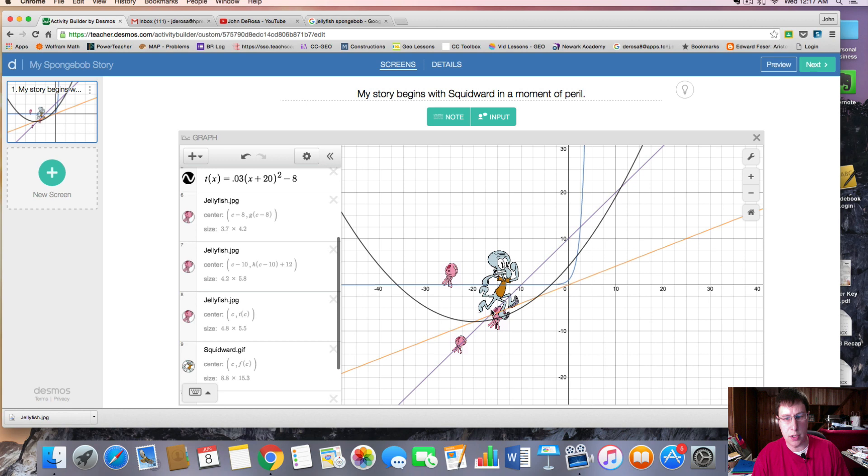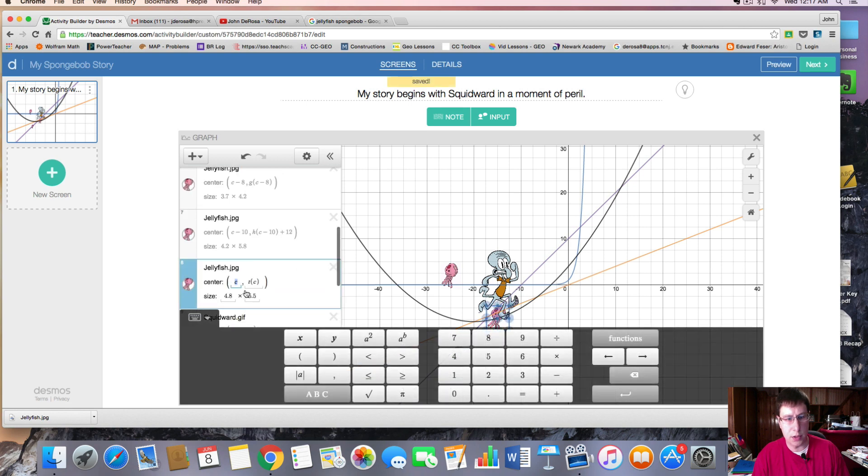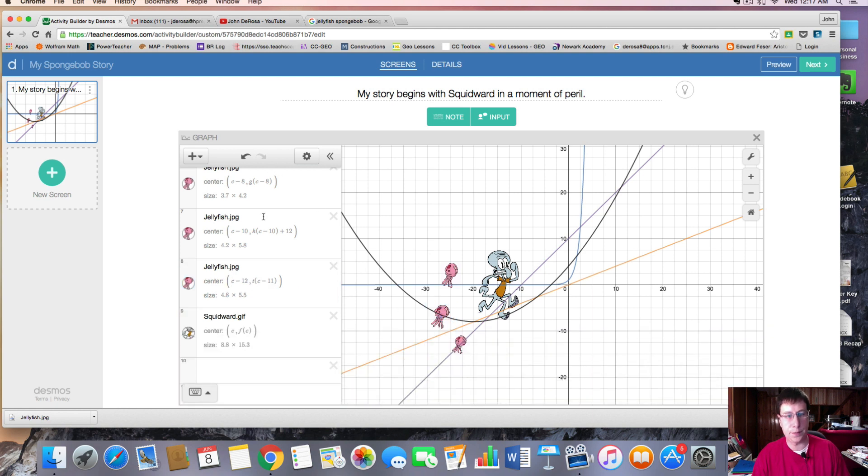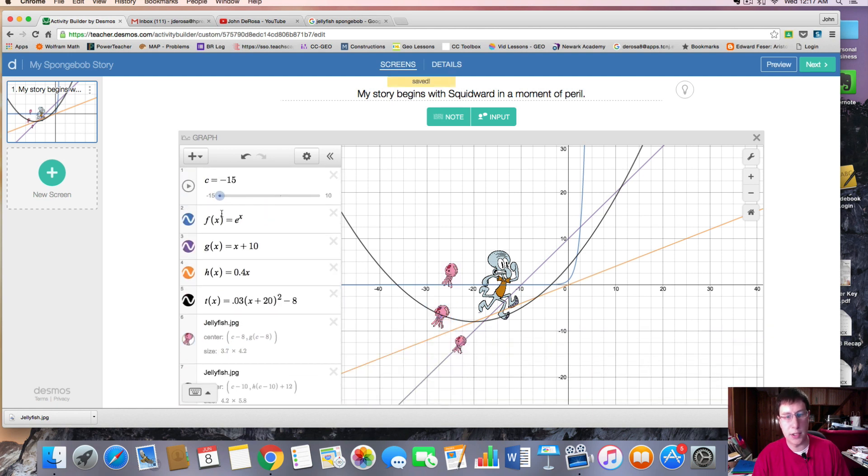We want to start him behind Squidward, though. So let's do c minus 10, 11, and t of c minus 11. And here we are. I think this is going to be a pretty good scene.